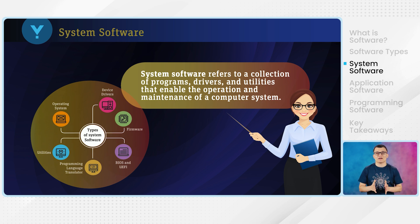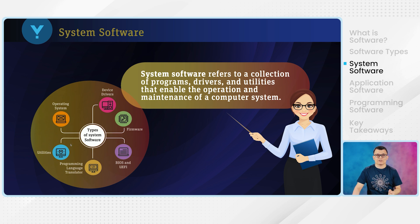Some common examples of system software include the operating system, device drivers, firmware, utility software, and programming language translators. Out of those, you should be most familiar with operating systems and utility software, as they are the ones you will see and interact with most often.